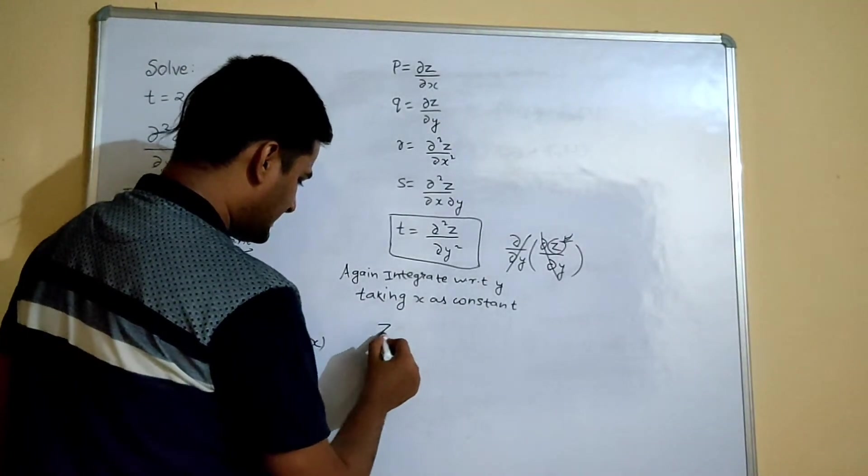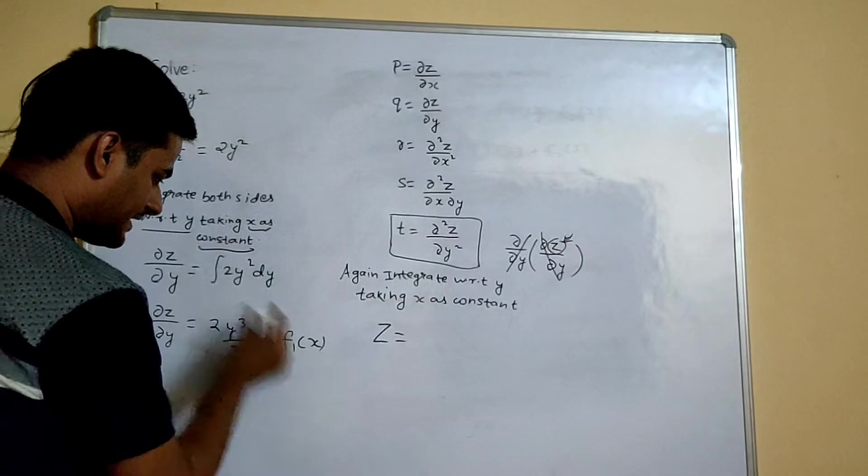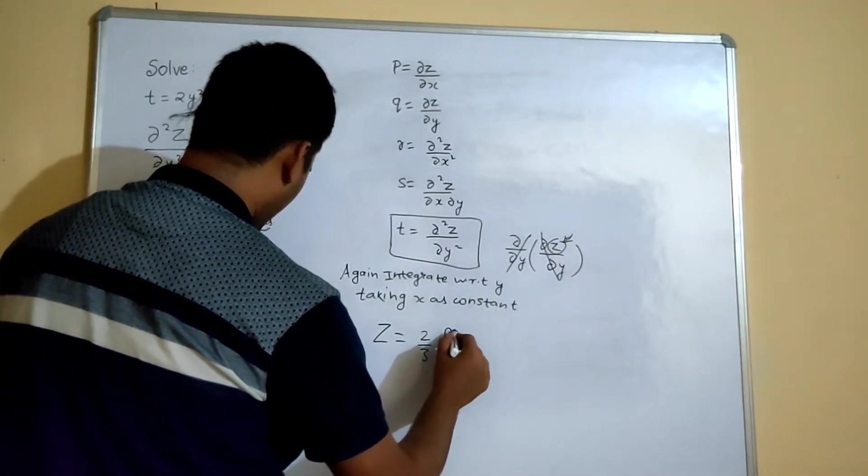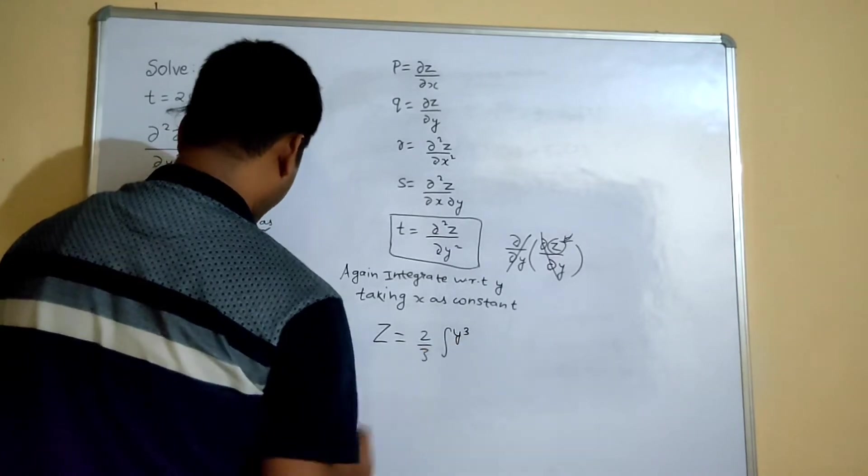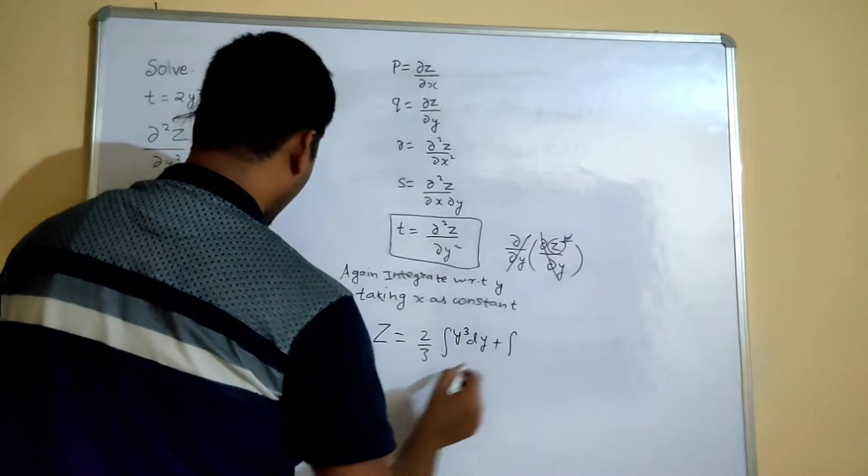Now you will get simply z equals to integration of this and integration of this. So 2 by 3 I am taking outside, integration of y cube dy, plus integration of f1(x).